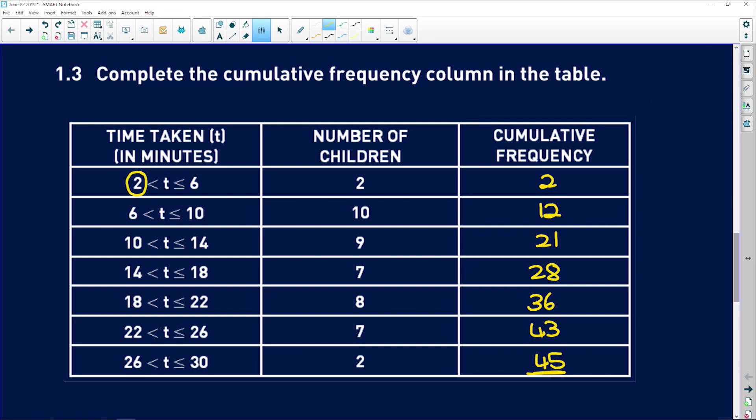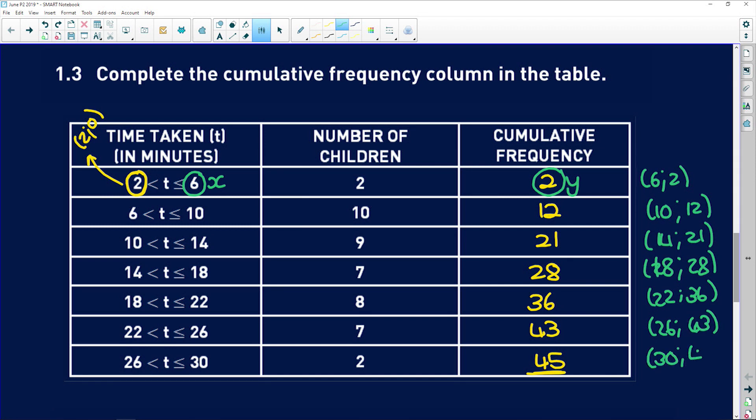Now what you do with an ogive is it always needs to be grounded on the x-axis, so the first point that you use is 2 and 0 - that's the grounding on the x-axis. You use the lower limit of the first interval, but now for the rest of the points you take the upper limit as the x value and the cumulative frequency as the y value. So the points you're going to get are 6 and 2, 10 and 12, 14 and 21, 18 and 28, 22 and 36, 26 and 43, and 30 and 45. So remember it's always the upper limit as your x value and the cumulative frequency as your y value. Remember, grounding first to zero.